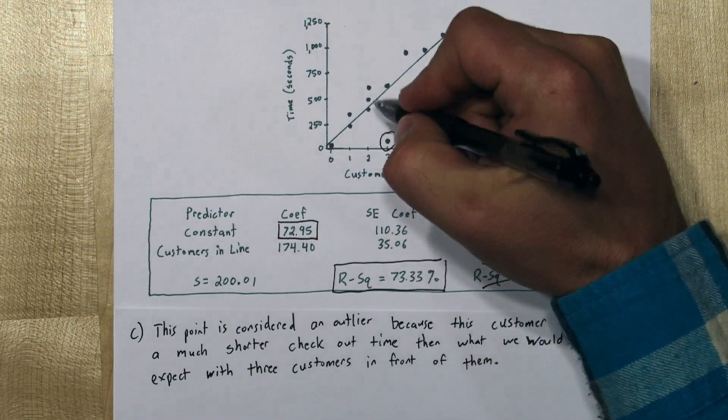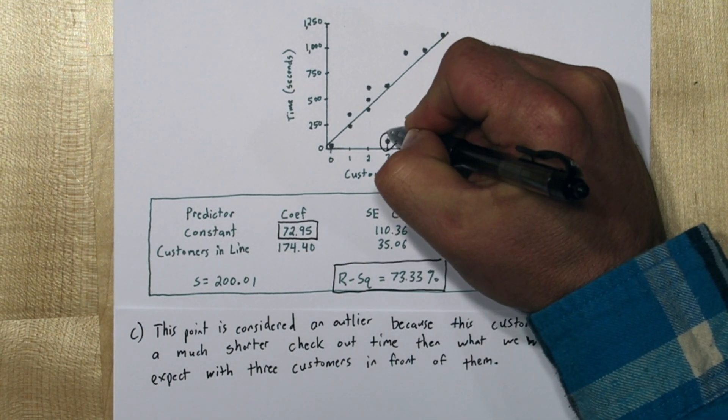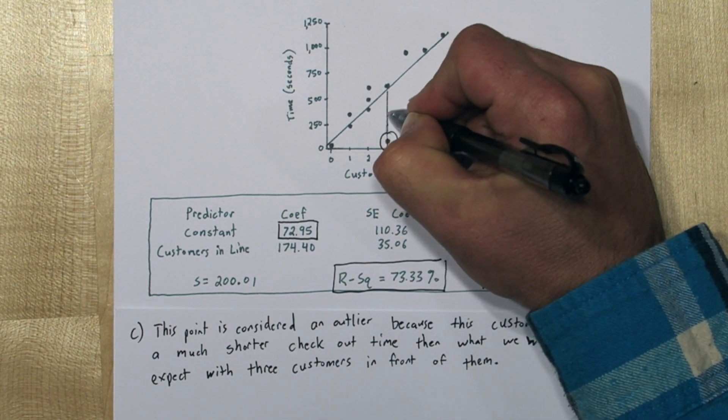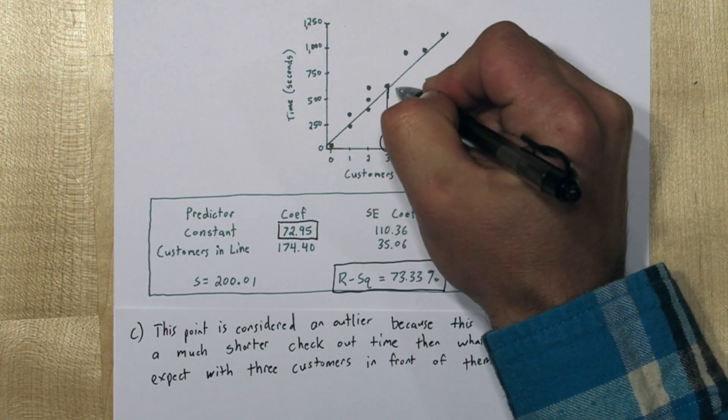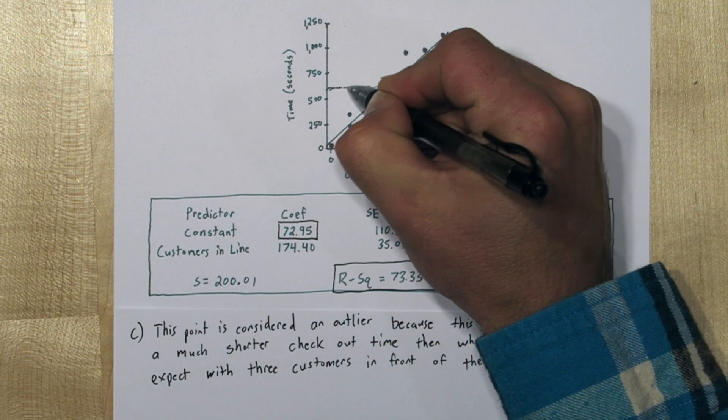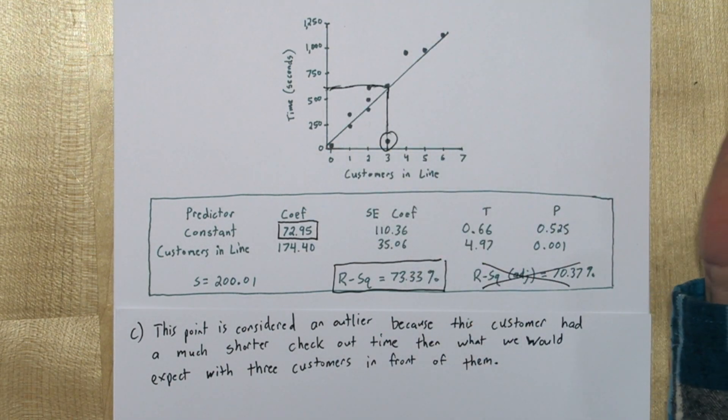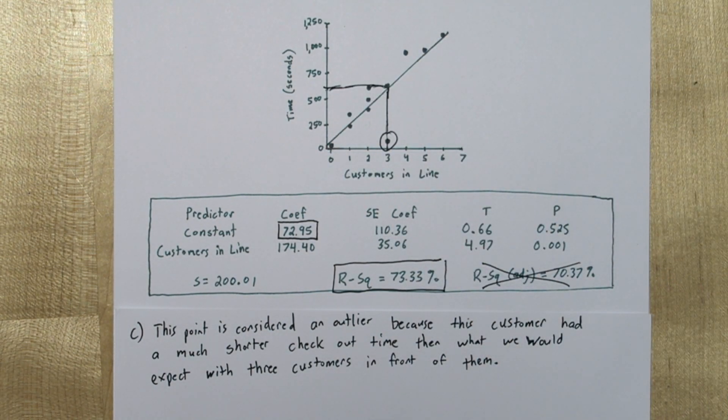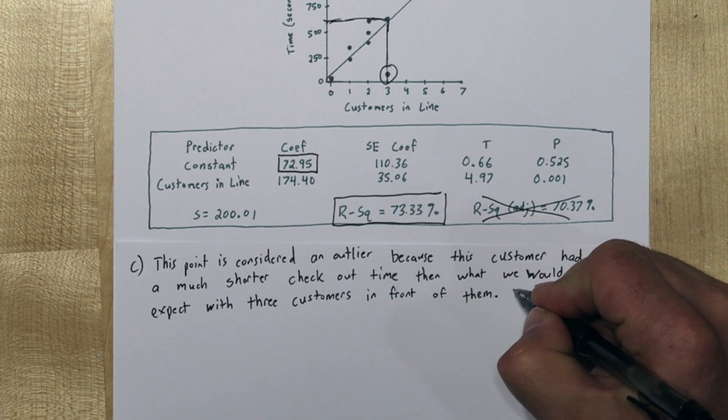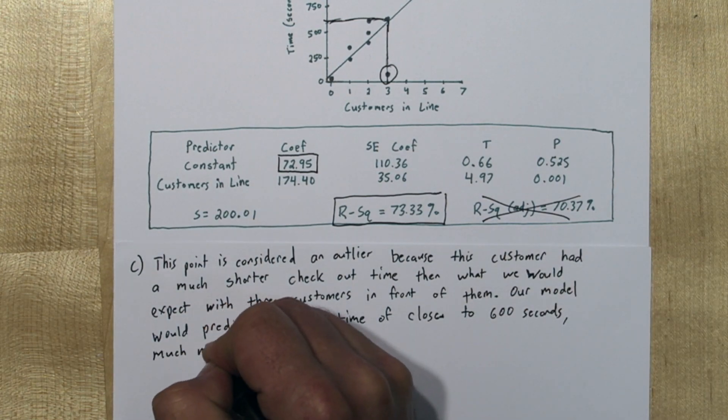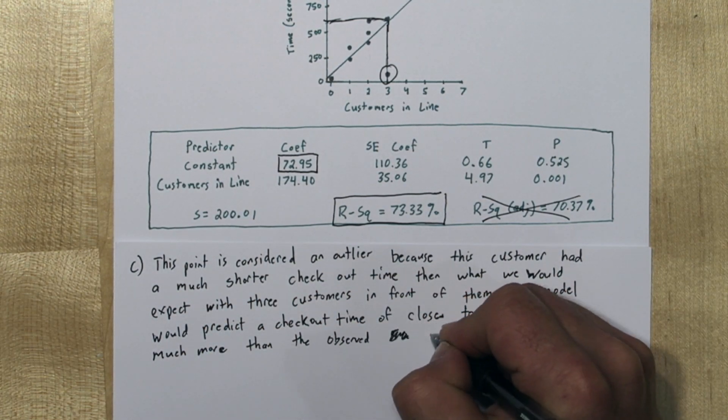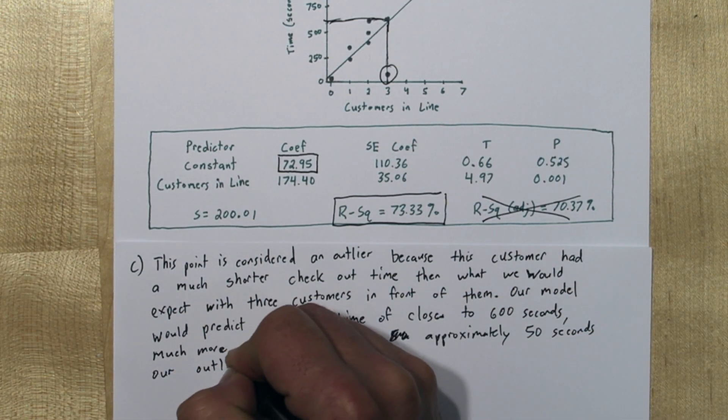Now, if we look at the scatterplot, typically with three customers in line, if we were going to follow this least squares regression line that's been graphed here, we'd expect a checkout time of, looks like closer to maybe 600 seconds. So I'm going to add that, it can't hurt. So I'll say our model would predict a checkout time of close to 600 seconds, much more than the observed approximately 50 seconds our outlier had.